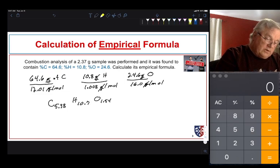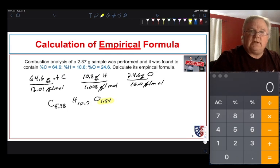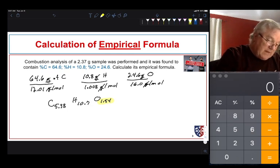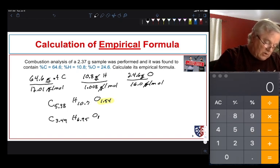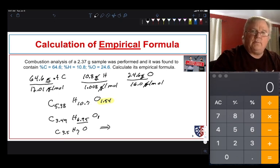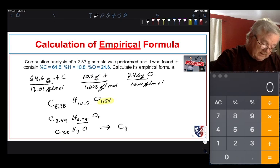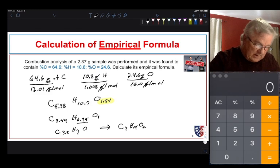So what we're going to do is divide each of these by the smallest coefficient and that will give us some idea. Might give us right away whole number coefficients. Turns out it doesn't. We'll get C 3.49, H 6.95, and O 1. Now these are close enough. This is close enough to 7 that we can assume 7. This is close enough to 3.5 to give us C3.5H7O. We're going to double that because we like to have whole number coefficients for our empirical formula, and that gives us C7H14O2 for our empirical formula.